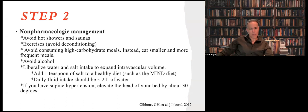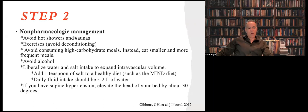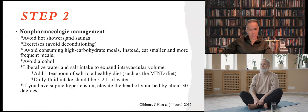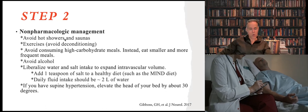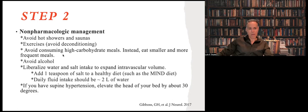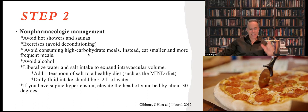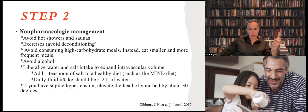Step two: before taking a pill for orthostatic hypotension, always try non-pharmacological management first. Number one, avoid hot showers and saunas. Also, avoid deconditioning — you need to do exercises and be physically active. Deconditioning happens quickly after being hospitalized and will exacerbate the symptoms of orthostatic hypotension. Try to avoid eating high-carbohydrate meals; instead, eat smaller and more frequent meals. Avoid alcohol. Also, increase your salt and water intake to expand the intravascular volume — you can add one teaspoon of salt to a healthy diet.